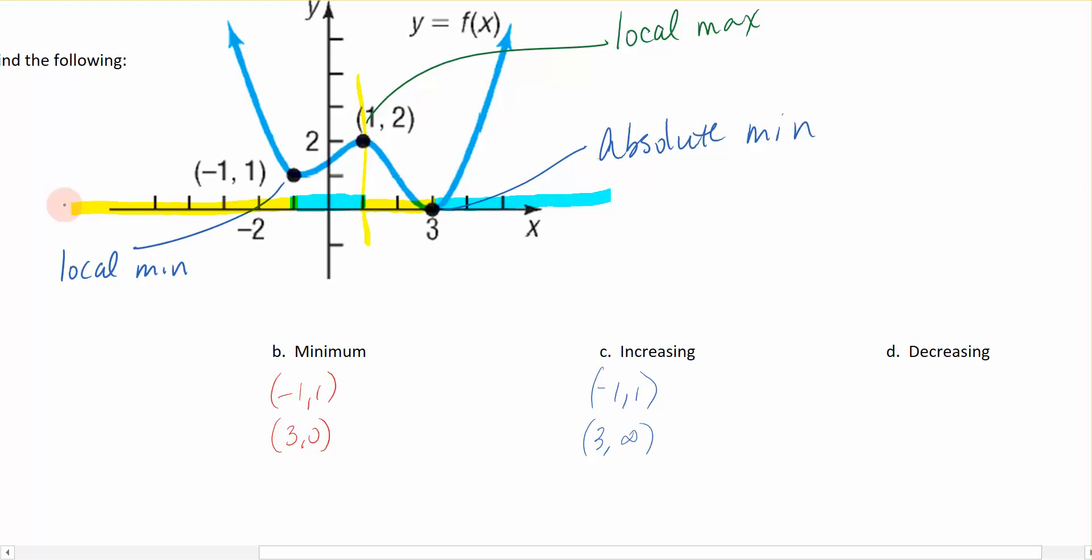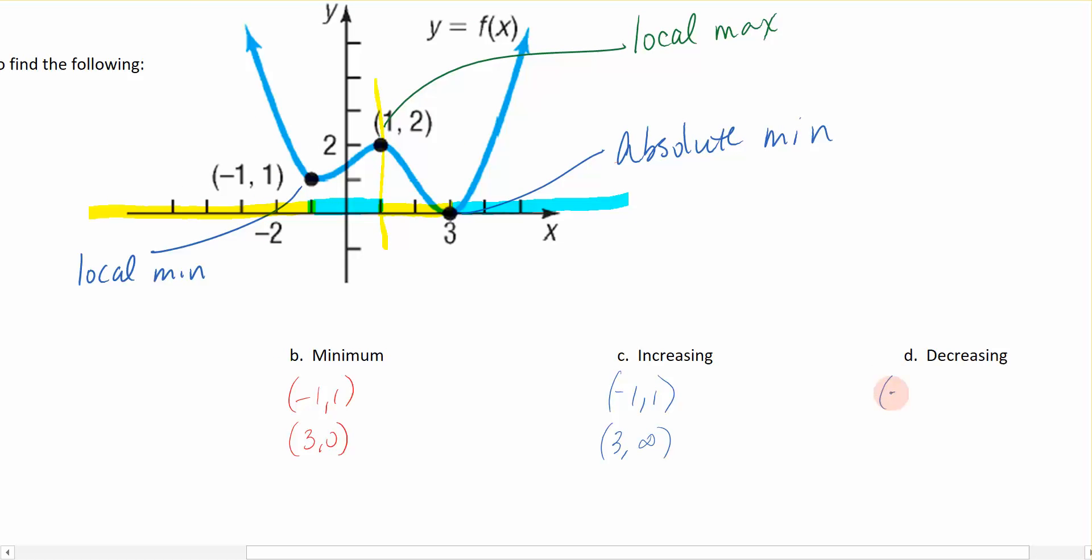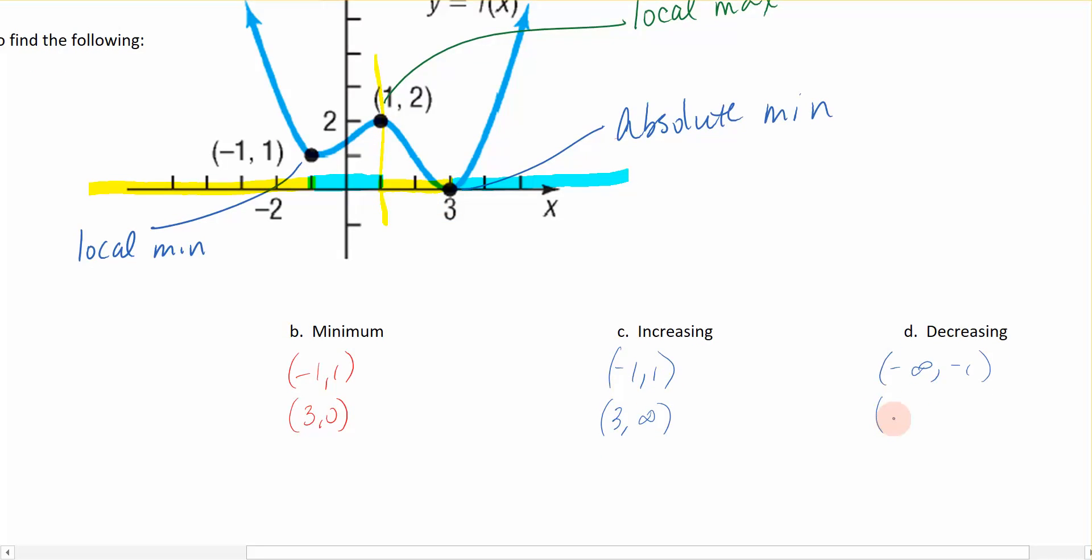So we determine increasing and decreasing based on the y value, but we write it in terms of x. Now where is the function decreasing? We're decreasing here in the yellows. So from negative infinity all the way up to negative 1, and then again from 1 to 3. That's the next section. We are decreasing from 1 to 3.